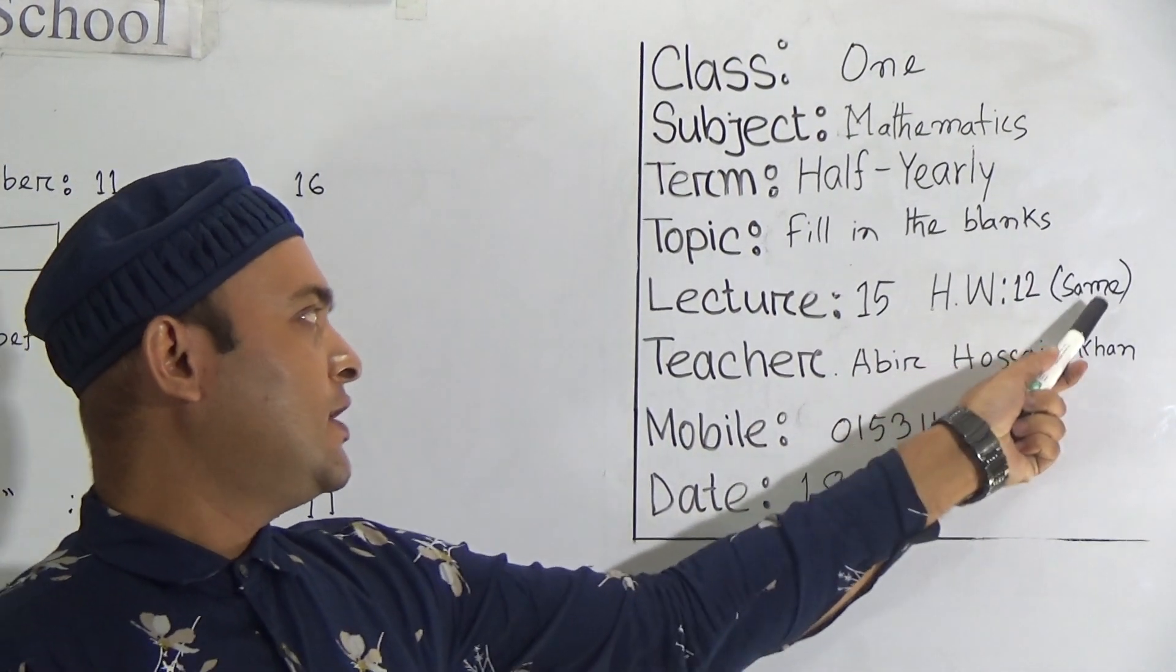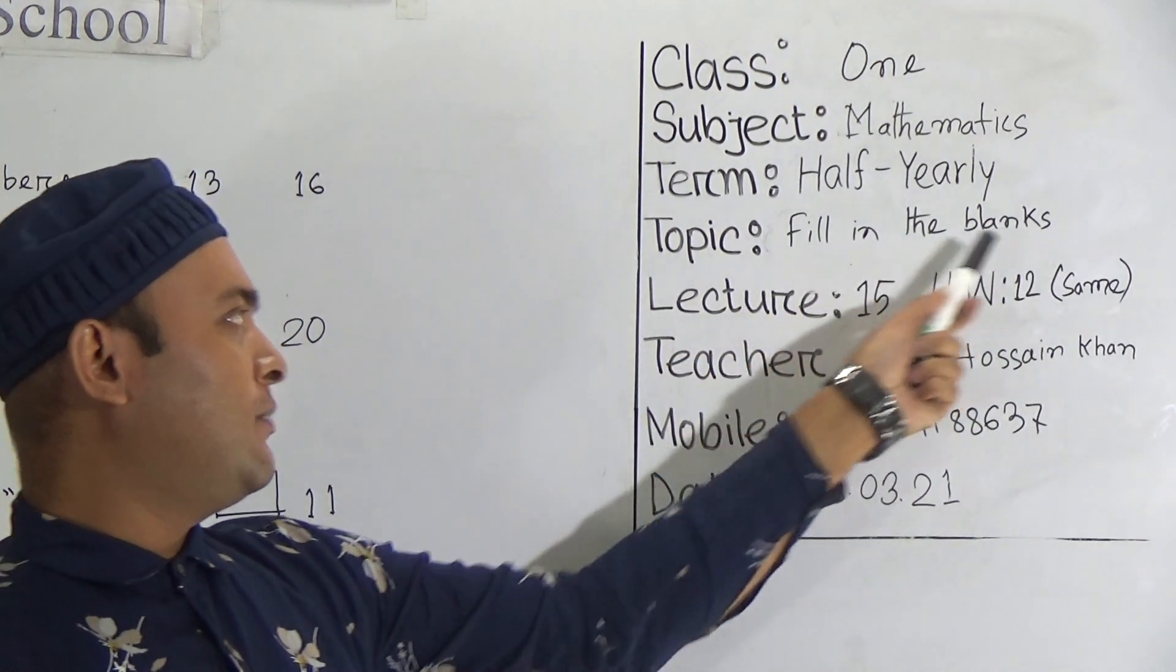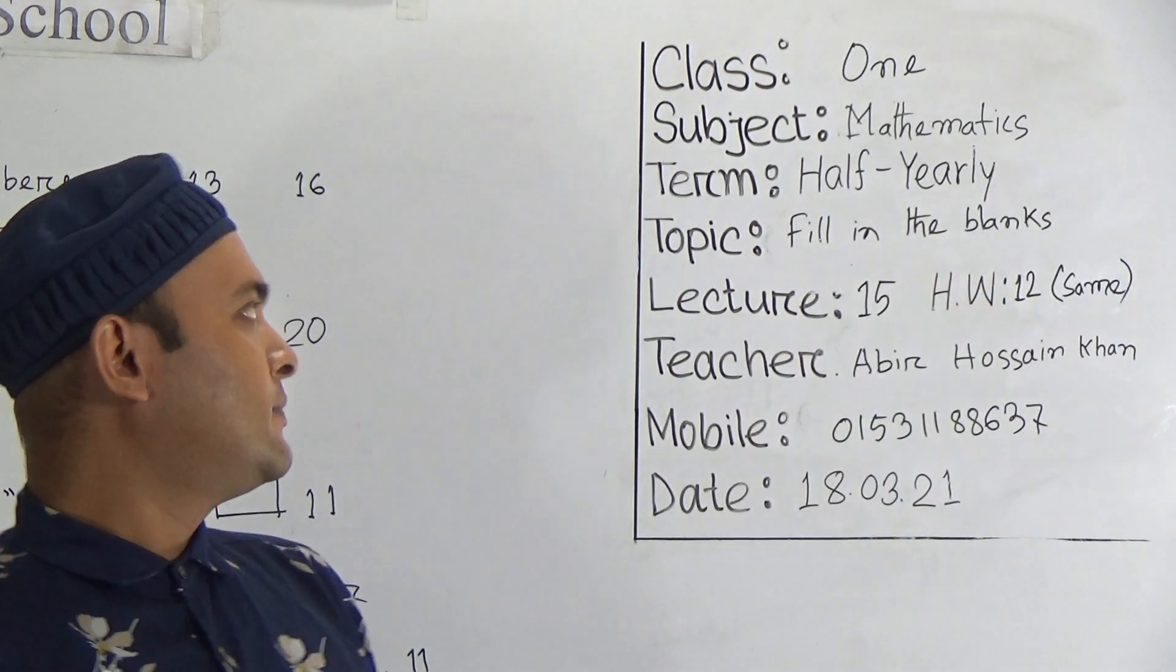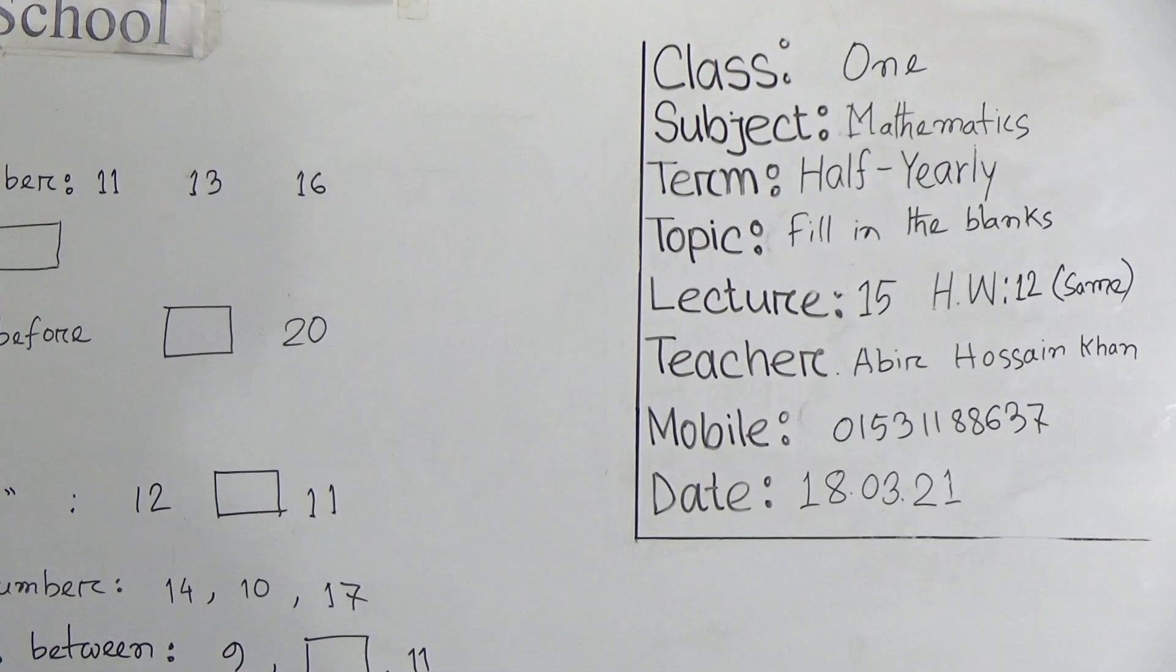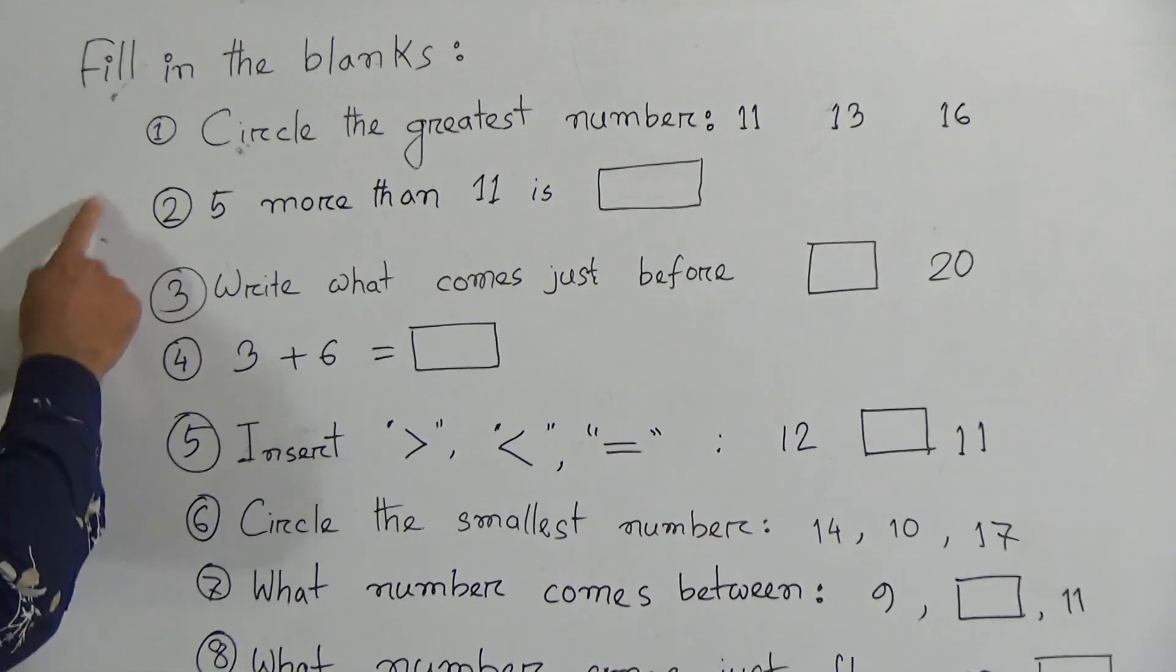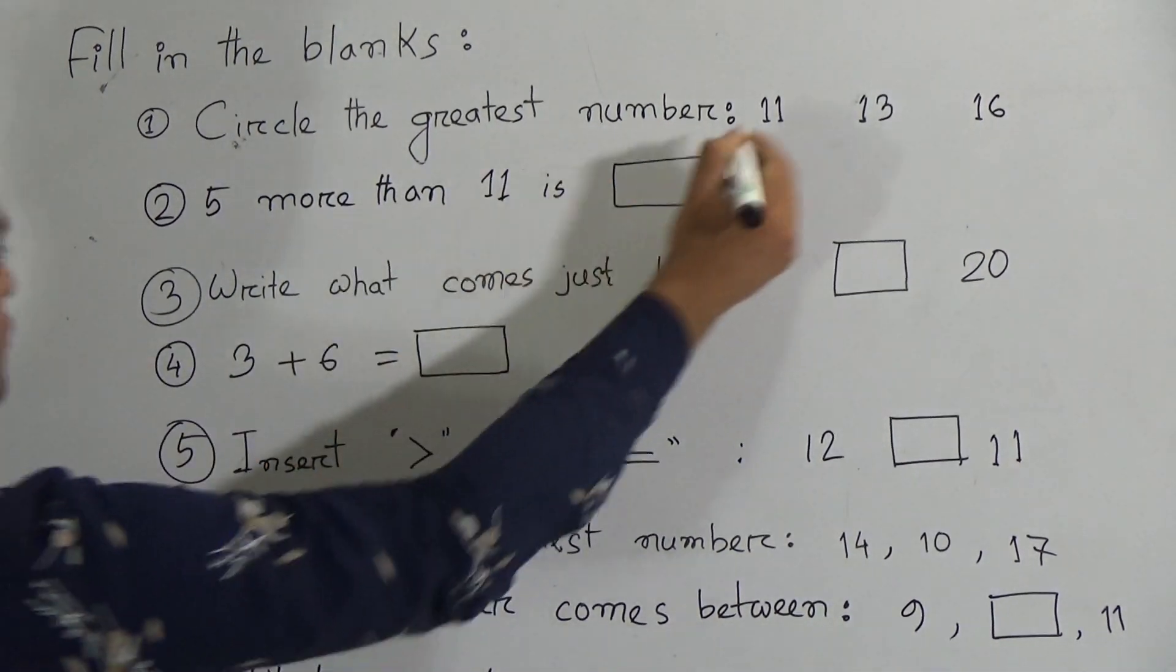Our topic is fill in the blanks, which is included in half-yearly syllabus. Now let's start our class. There are some questions. First one: circle the greatest number. Here, first one is 11, second one is 13.